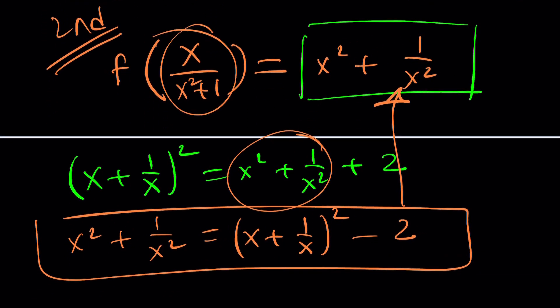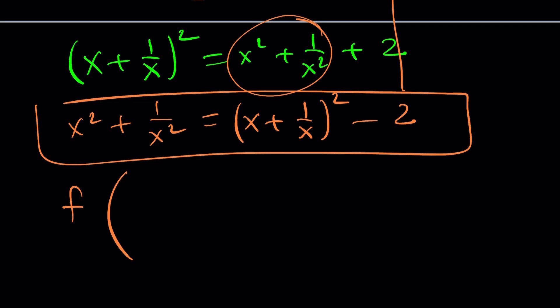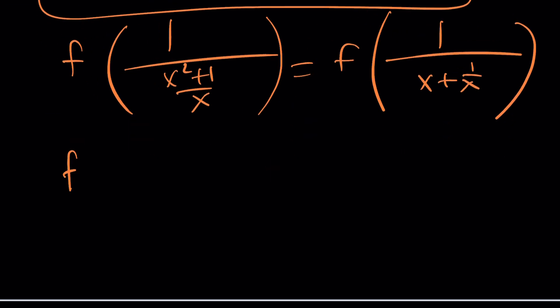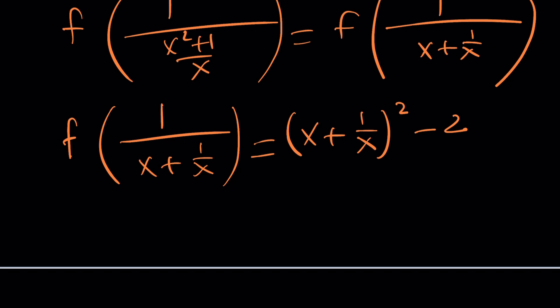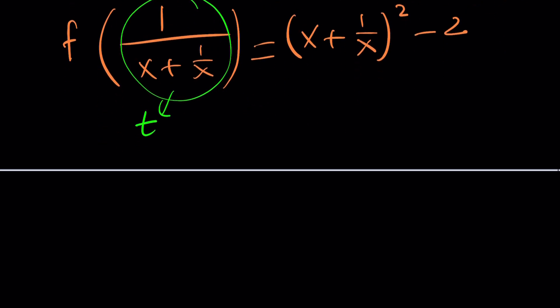Good. Now, if you go ahead and flip that, write it as 1 over x squared plus 1 over x, you'll probably realize the following. This can be written as x plus 1 over x, and it's just awesome. You know why? Because if you go ahead and write it this way, f of 1 over x plus 1 over x equals, and the right-hand side is just x plus 1 over x quantity squared minus 2. And now, if you set the whole thing equal to a variable like t, or whatever variable you want to use, I'll use t again.